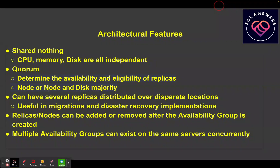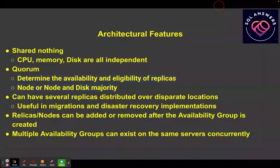You can also use availability groups for migrations. A good example from a project I was involved with was migrating from a co-location data center facility into AWS. When it came time to flip the switch and migrate over, all we needed to do was fail over to the replica sitting in AWS. We were able to do this all in minutes, as opposed to doing a full backup and restore, which would have taken many hours to migrate into the new AWS setup.